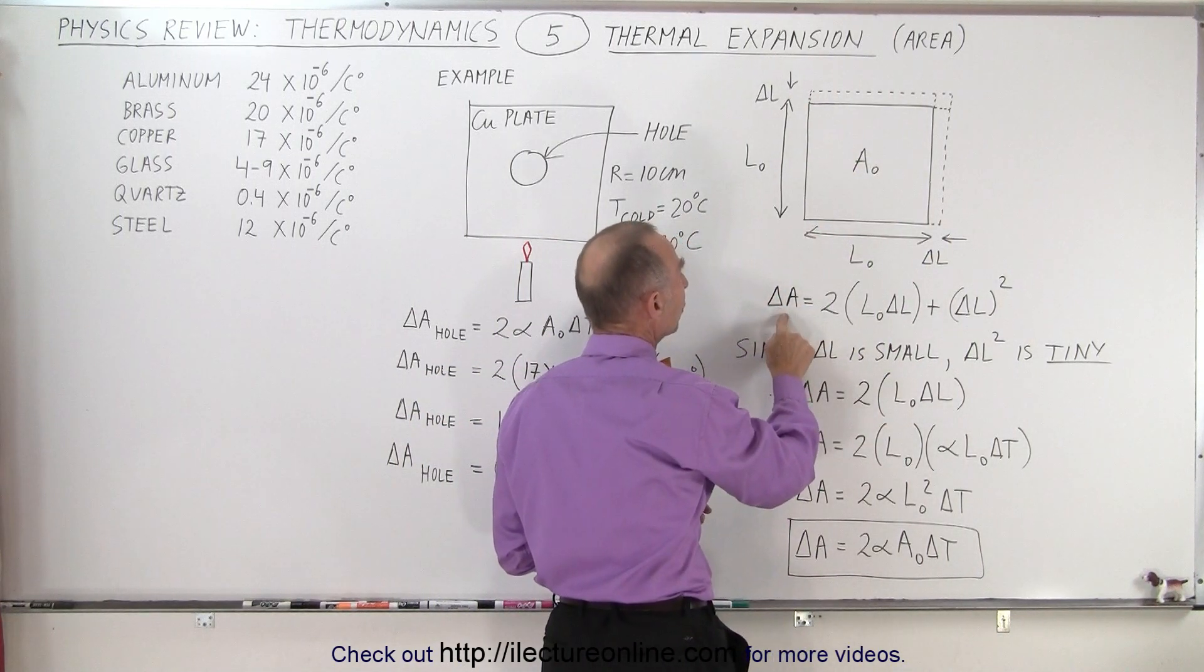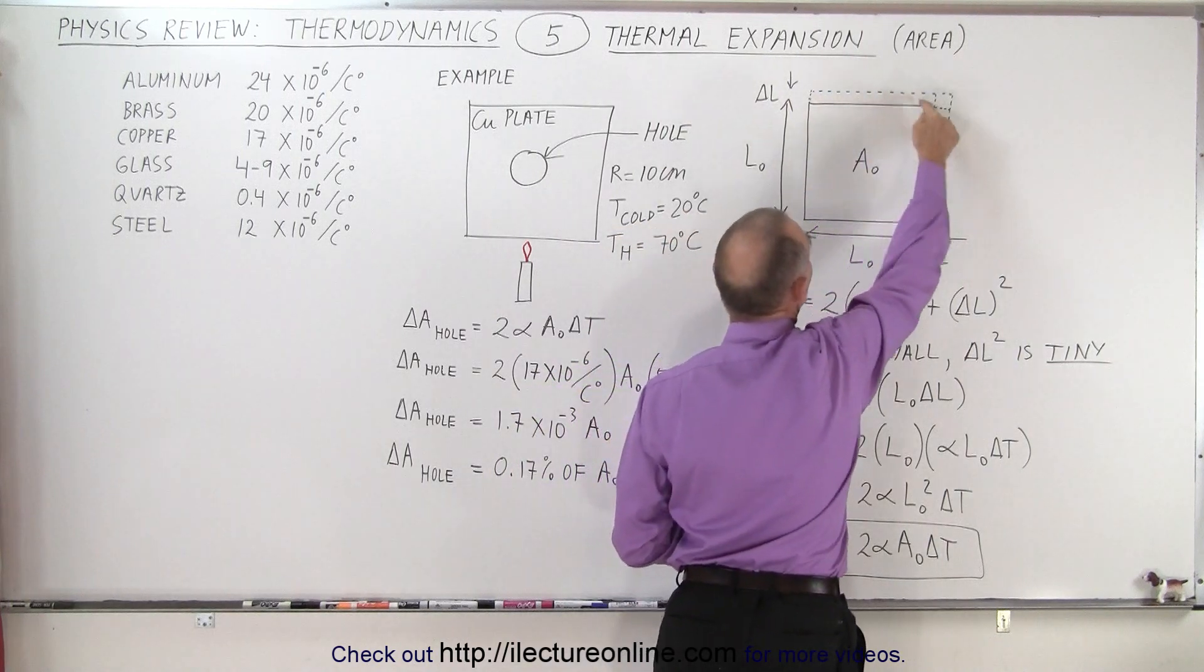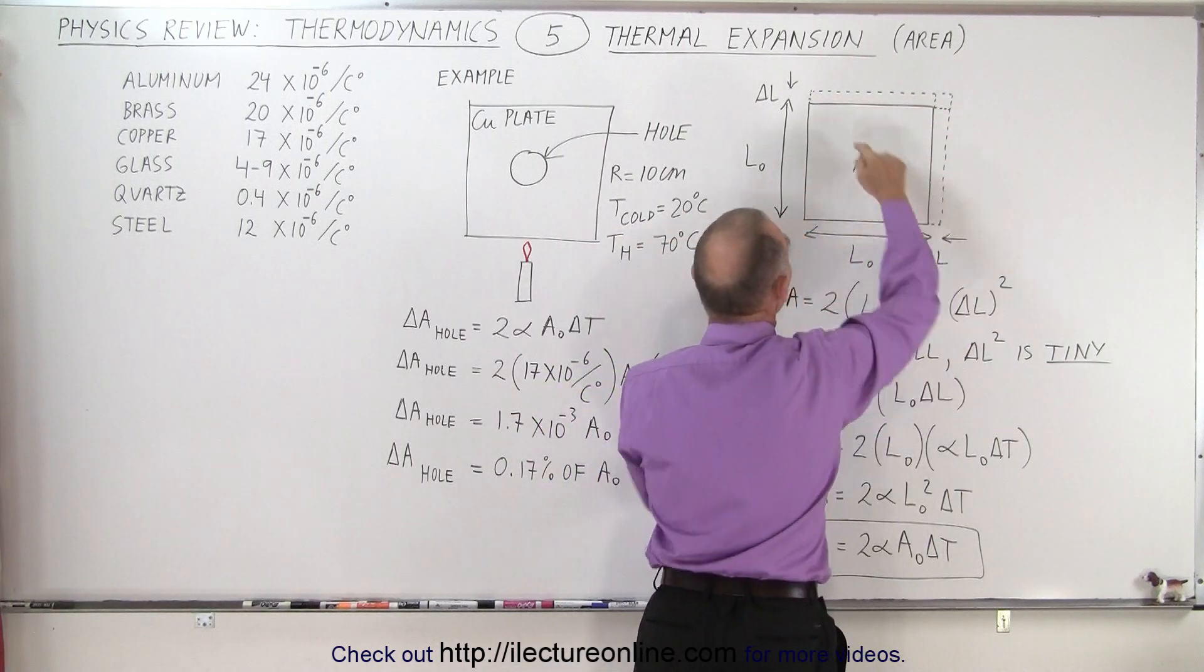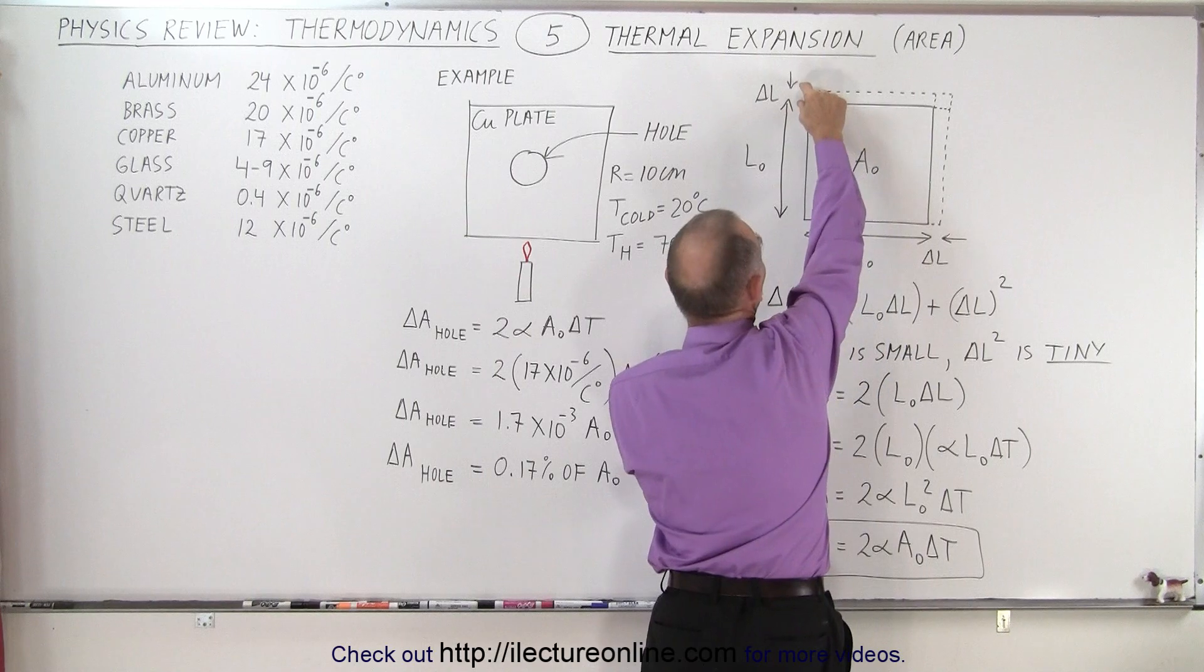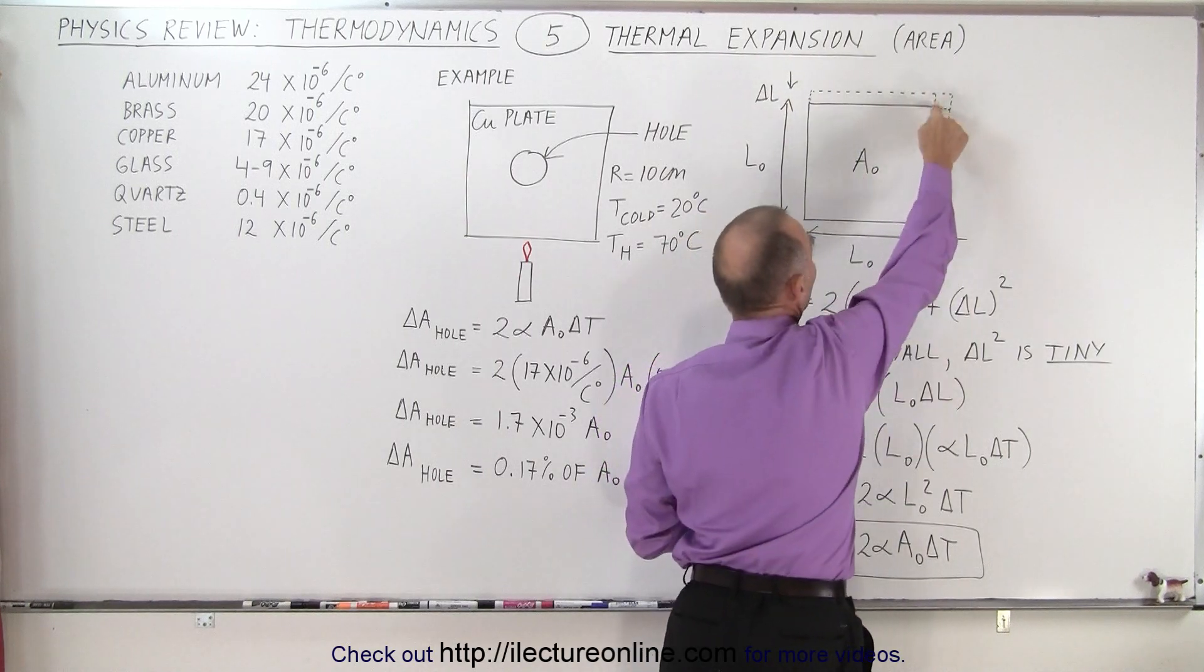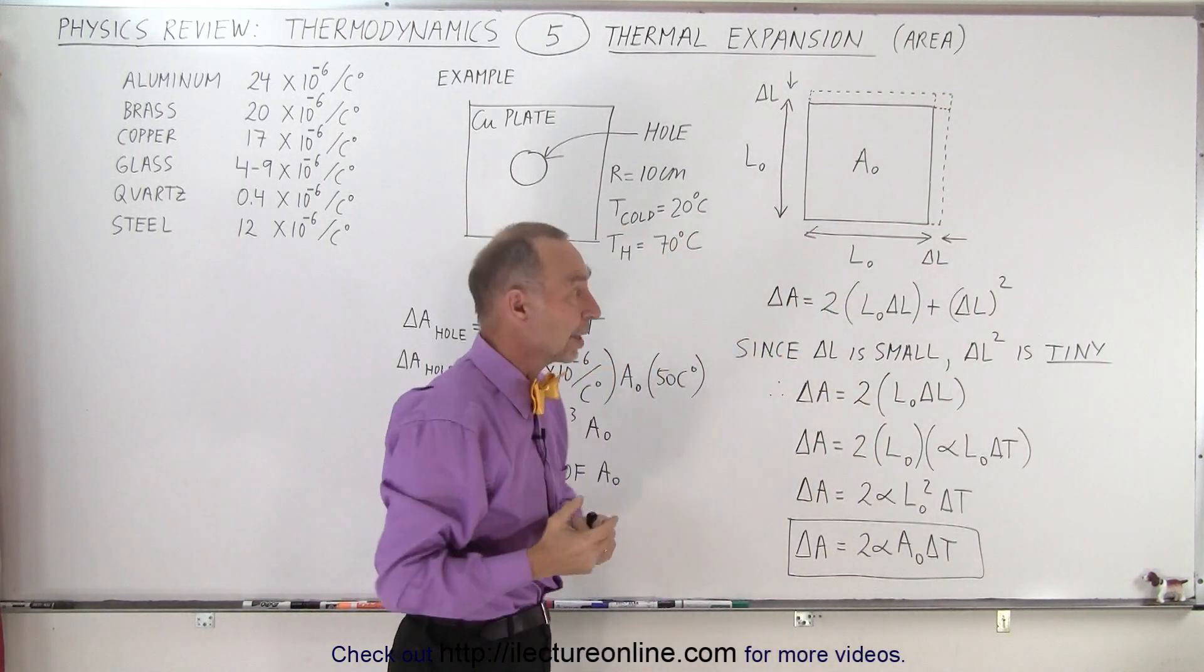The change in area equals the sum of these two areas, which is the initial length times the change in length, plus this little piece here, which is the change in length squared.